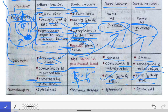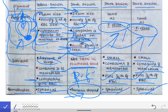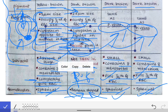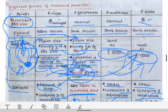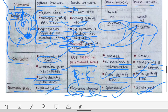The next difference is in the gametocytes. Gametocytes are spherical in case of vivax, malaria, and ovale, but they are banana-shaped in case of Plasmodium falciparum — this is an important exam question. The accolé form is also seen in Plasmodium falciparum. This covers all the differences between the malarial parasites: vivax, falciparum, malaria, and ovale.